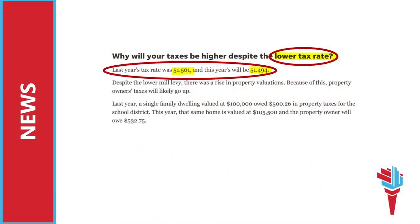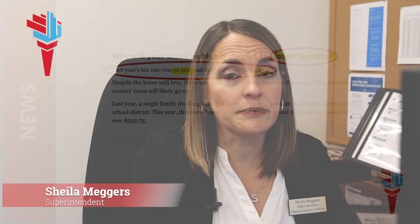Tax rate and mill rate are often used interchangeably. The mill rate is used to generate taxes. This shows that our mill rate was 51.501 last year, and we adopted 51.494 mills for this year. Those numbers are accurate and reflect a slight decrease of .007 mills. We'll see those numbers throughout this presentation, so I'd like to show you where those numbers come from.